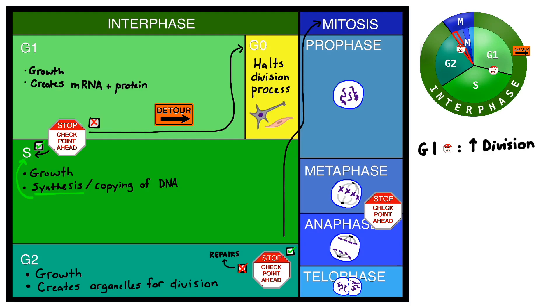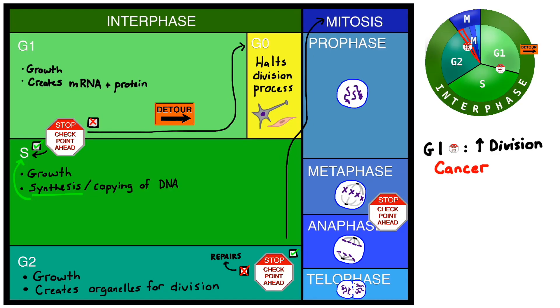If an error occurs at the G1 checkpoint, it often results in increased cell division. When damaged, unhealthy cells divide far too rapidly, we call it cancer.